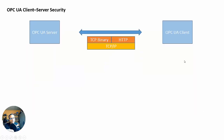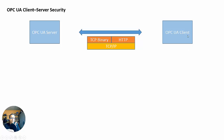With an OPC UA client connecting to an OPC UA server, we're looking at TCP/IP — either TCP binary or HTTP and so on. And we have to consider four things when looking at security with the OPC UA client-to-server connection.